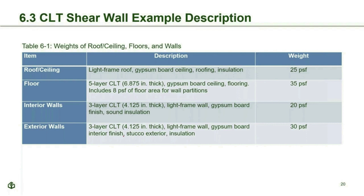As a reference for those new to CLT, for specific gravity equal to 0.42 panels (spruce-pine-fir used in the example) and moisture content of 12%, the density is 28 pcf. For Douglas fir panels the density is approximately 33 pcf. For three-ply wall panels, weight is approximately 9.6 psf; for five-ply floor panels, weight is approximately 16 psf.